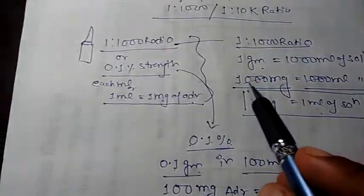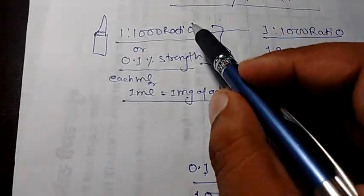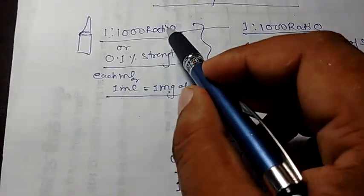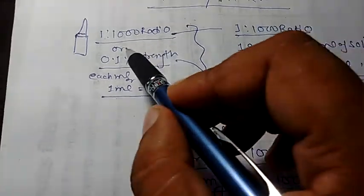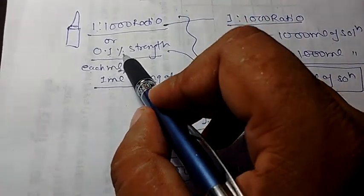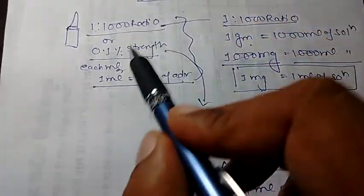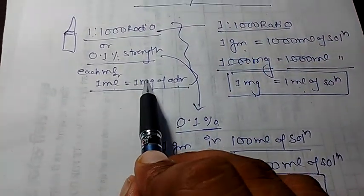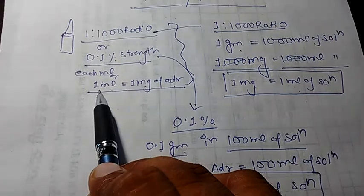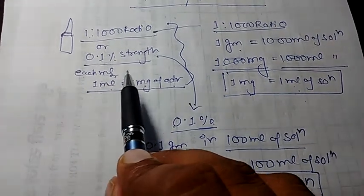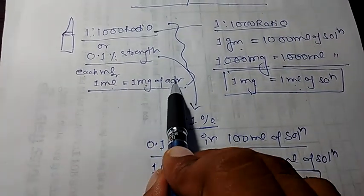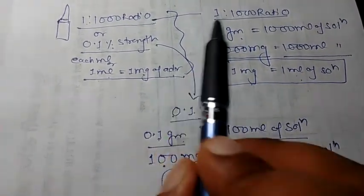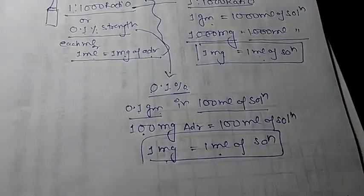So the 1:1000 ratio, 0.1% strength, and 1 ml of solution containing 1 mg of Adrenaline all mean exactly the same thing. Now I am going to explain how it will be titrated in different ratios.